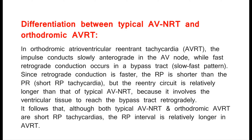Differentiation between typical AVNRT and orthodromic AVRT: in orthodromic atrioventricular re-entrant tachycardia (AVRT), the impulse conducts slowly anterograde in the AV node while fast retrograde conduction occurs in a bypass tract — a slow-fast pattern. Since retrograde conduction is faster, the RP is shorter than the PR (short RP tachycardia), but the re-entry circuit is relatively longer than that of typical AVNRT, because it involves ventricular tissue to reach the bypass tract retrogradely. Thus, although both are short RP tachycardias, the RP interval is relatively longer in AVRT.